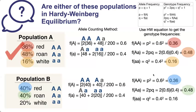We notice right away that these numbers do not match — they are not the same as what was in the original population. So population A is in Hardy-Weinberg equilibrium and population B is not.